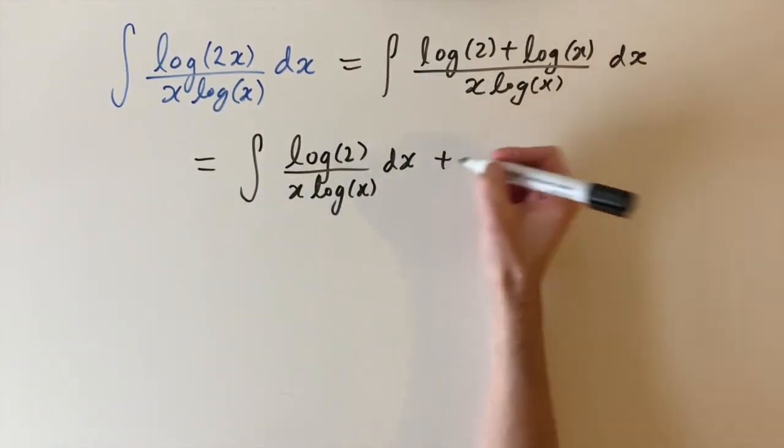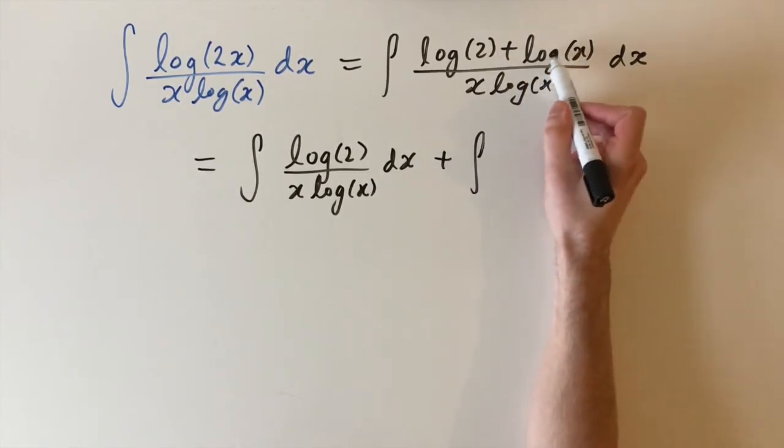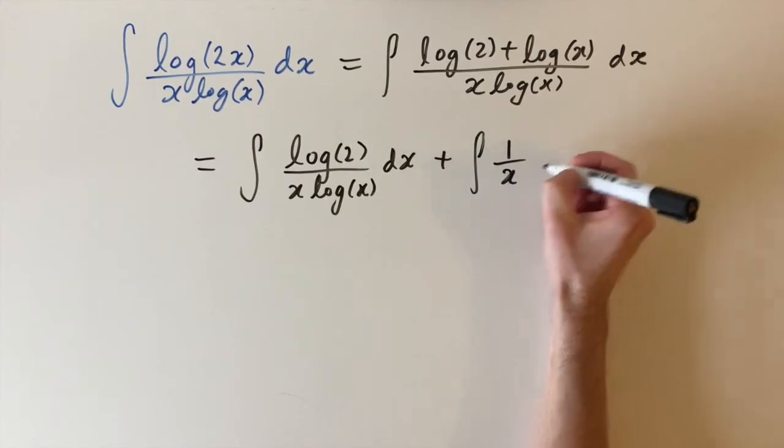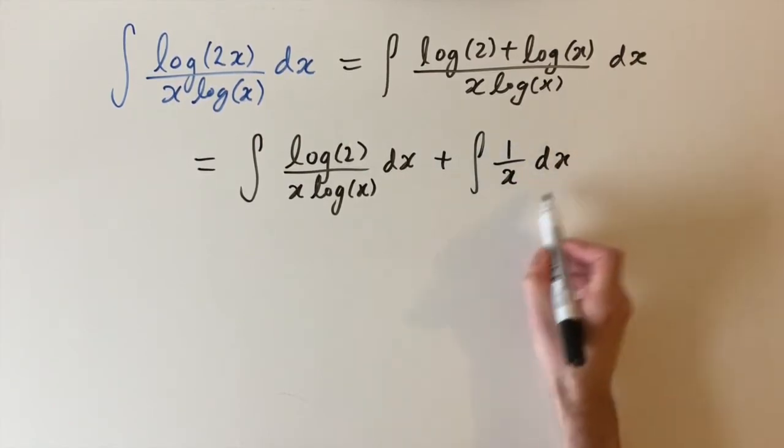And using linearity, we have the integral. So for the second term, we said the log logs we're going to cancel. So we just have 1 over x dx. And this is nice because we can integrate this straight away. This is just a logarithm of x.